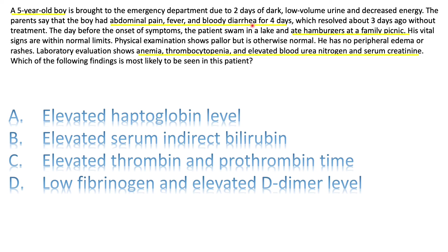I need to correlate eating hamburgers with bloody diarrhea — there are only two possibilities: Shigella or enterohemorrhagic E. coli. Both can produce the Shiga toxin. Vitals are normal. Physical exam shows pallor and decreased energy — probably anemia. Labs show anemia, thrombocytopenia, and elevated blood urea nitrogen and serum creatinine — this is why he has oliguria. This is a giveaway: this is hemolytic uremic syndrome (HUS).